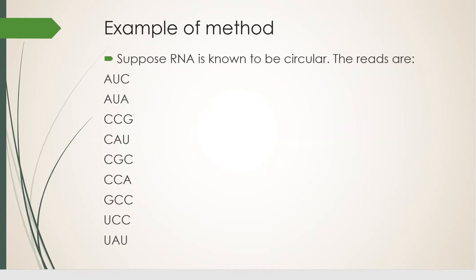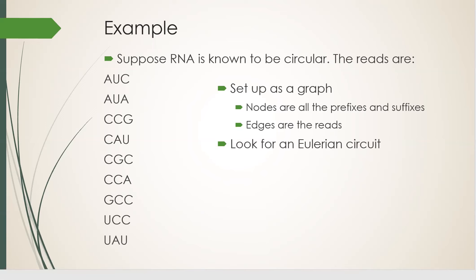Let's walk through the complete method with an example. Suppose we know the RNA is circular. For example, scientists know the RNA of the coronavirus is circular, so we're looking for an Eulerian circuit. And suppose these are the reads. The plan of attack is this: set up as a graph, where the nodes are all the prefixes and suffixes and the edges are all the reads. Then we look for an Eulerian circuit using the methods of graph theory.